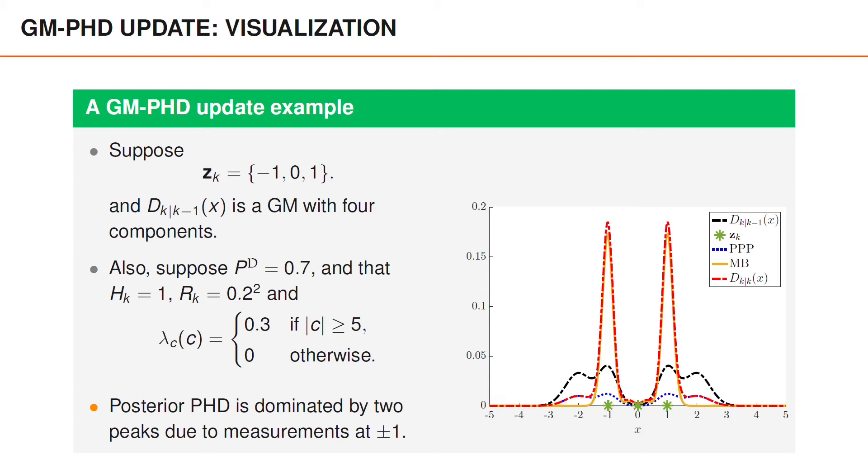When considering the posterior phd, I encourage you to recall its interpretation as the expected number of objects per unit, and that we approximate the posterior as a Poisson point process with this intensity function.